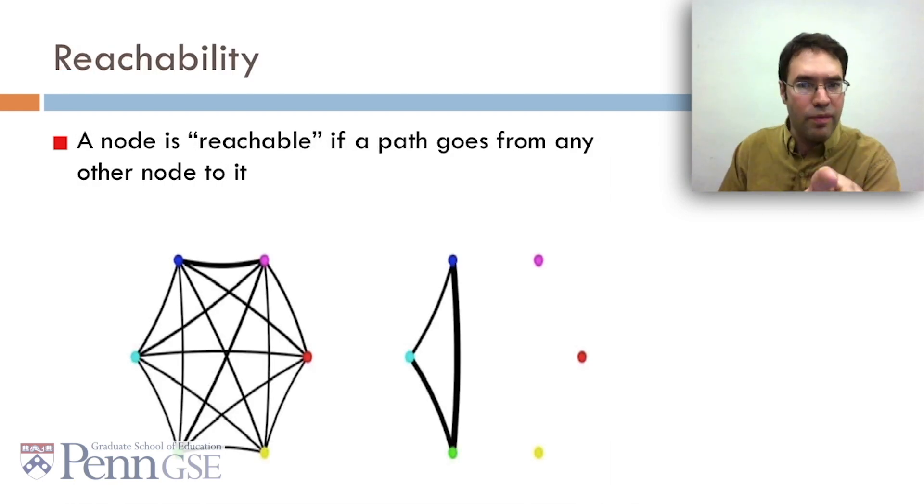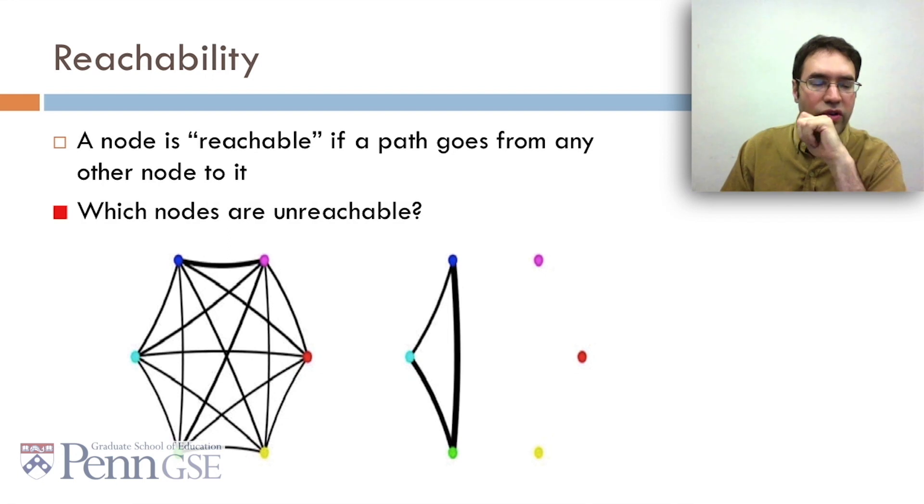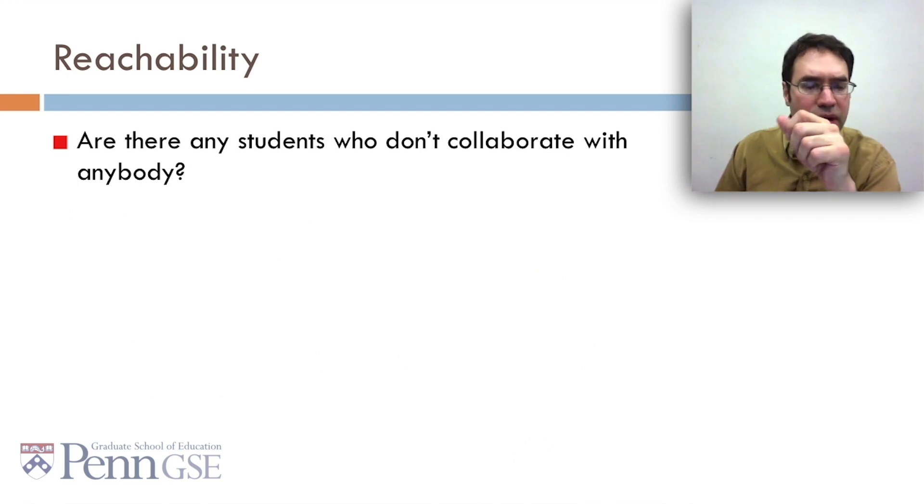A node is reachable if a path goes from any other node to it. So for example, which nodes are unreachable here? It's the pink, red, and yellow on the right graph. And you can think of this as meaning, are there any students who don't collaborate with anybody at all?